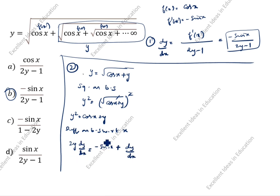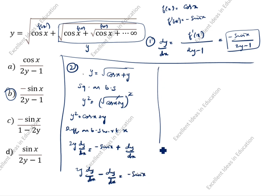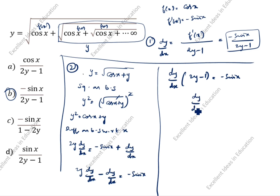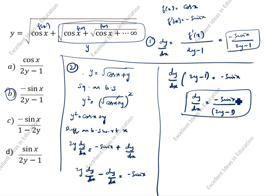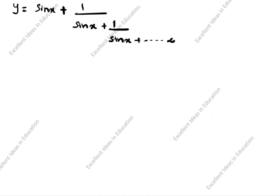dy/dx appears on both sides, so we bring it to one side: 2y·dy/dx − dy/dx = −sin x. Taking dy/dx as common: dy/dx·(2y − 1) = −sin x, so dy/dx = −sin x/(2y − 1). Both answers are the same. We will see the next question.